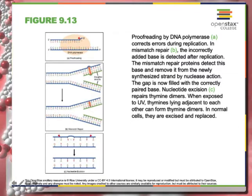Most mistakes are corrected by DNA polymerase as it moves along. If they're not corrected, you'll have a permanent change in your DNA sequence. Changes in the genetic code can change a protein's shape, which is vital to its function. Sometimes there can be additions to the genetic code, like insertions — we'll go over that in the next section. So some mistakes can be corrected and some cannot.